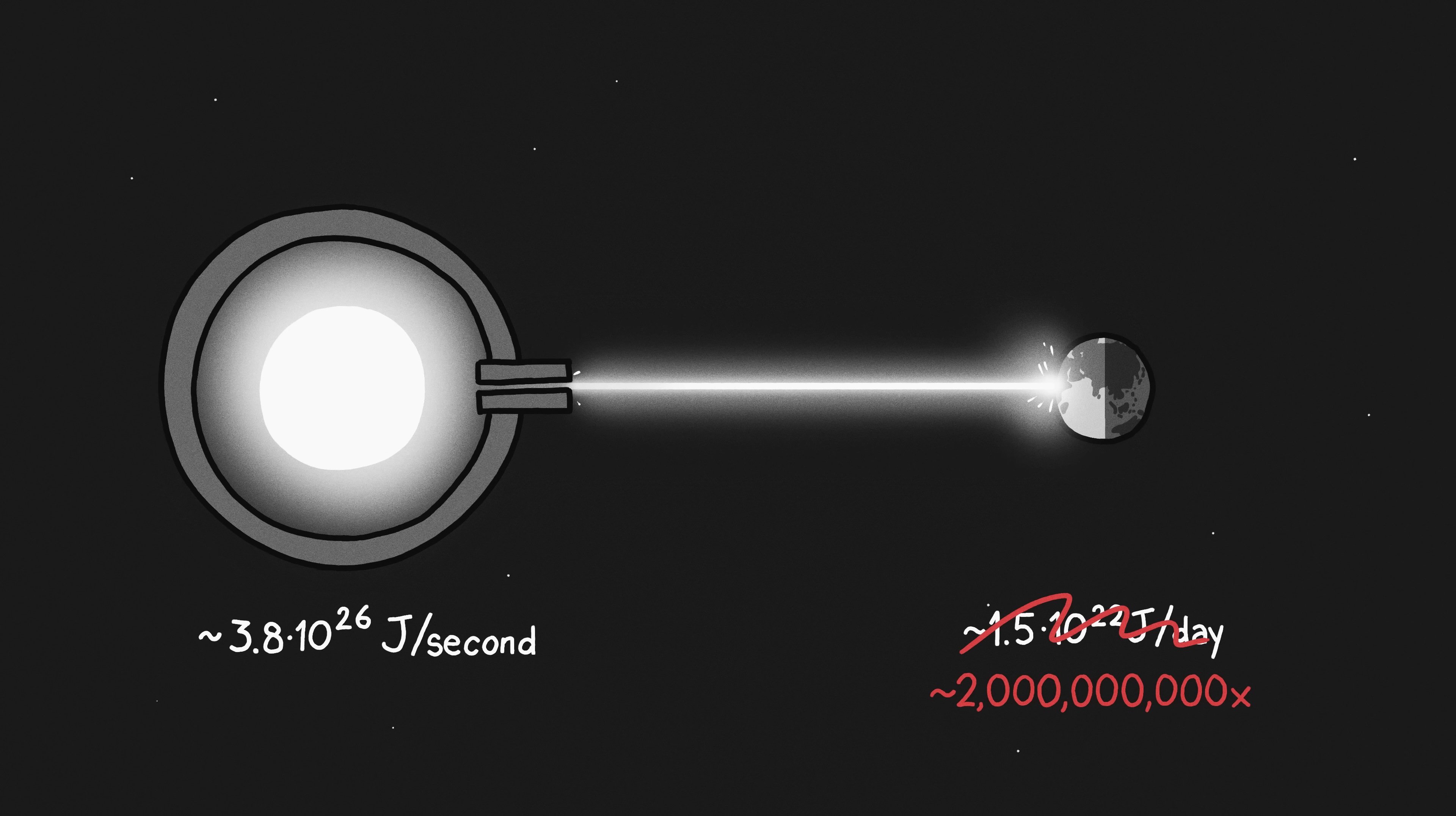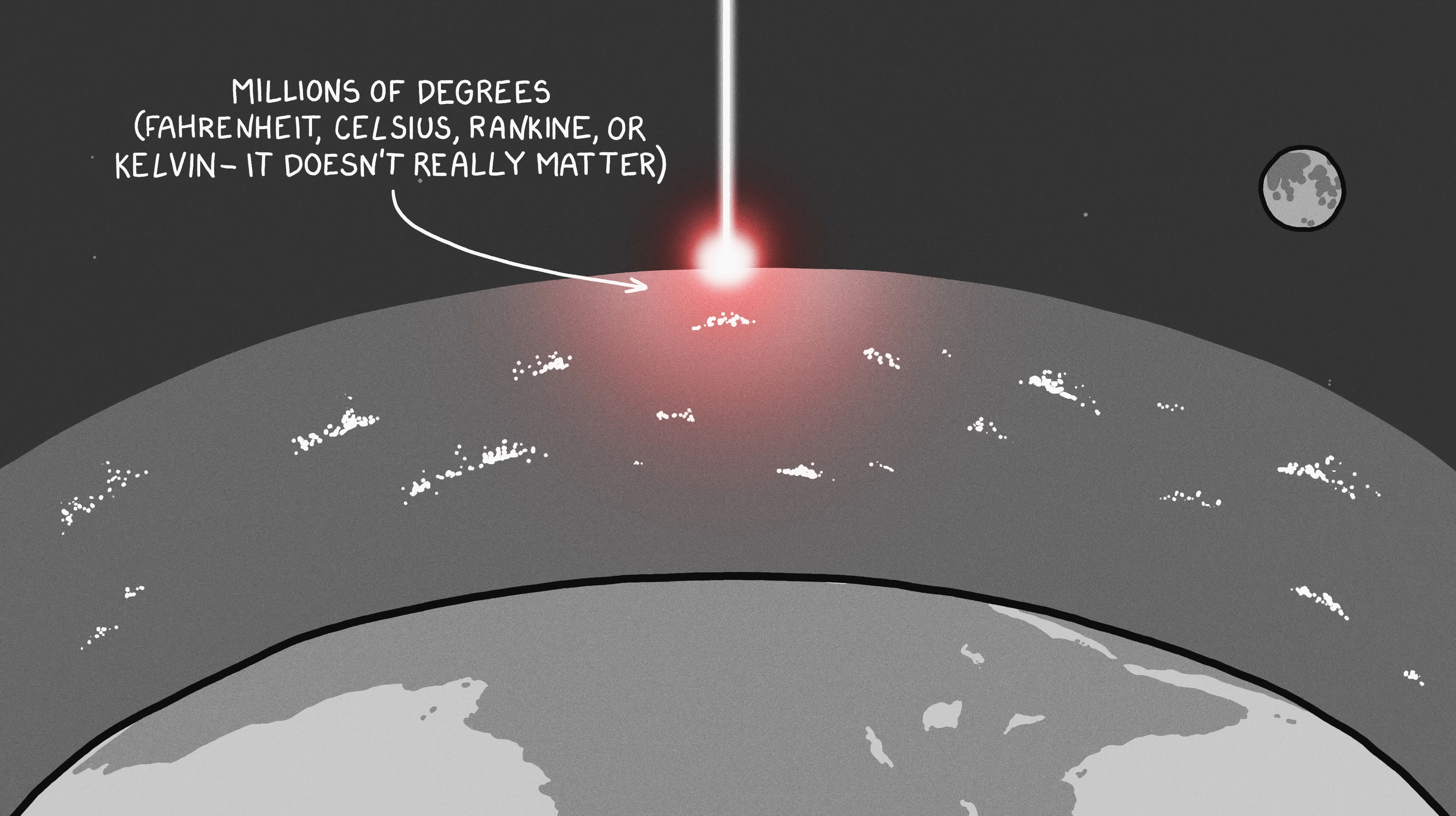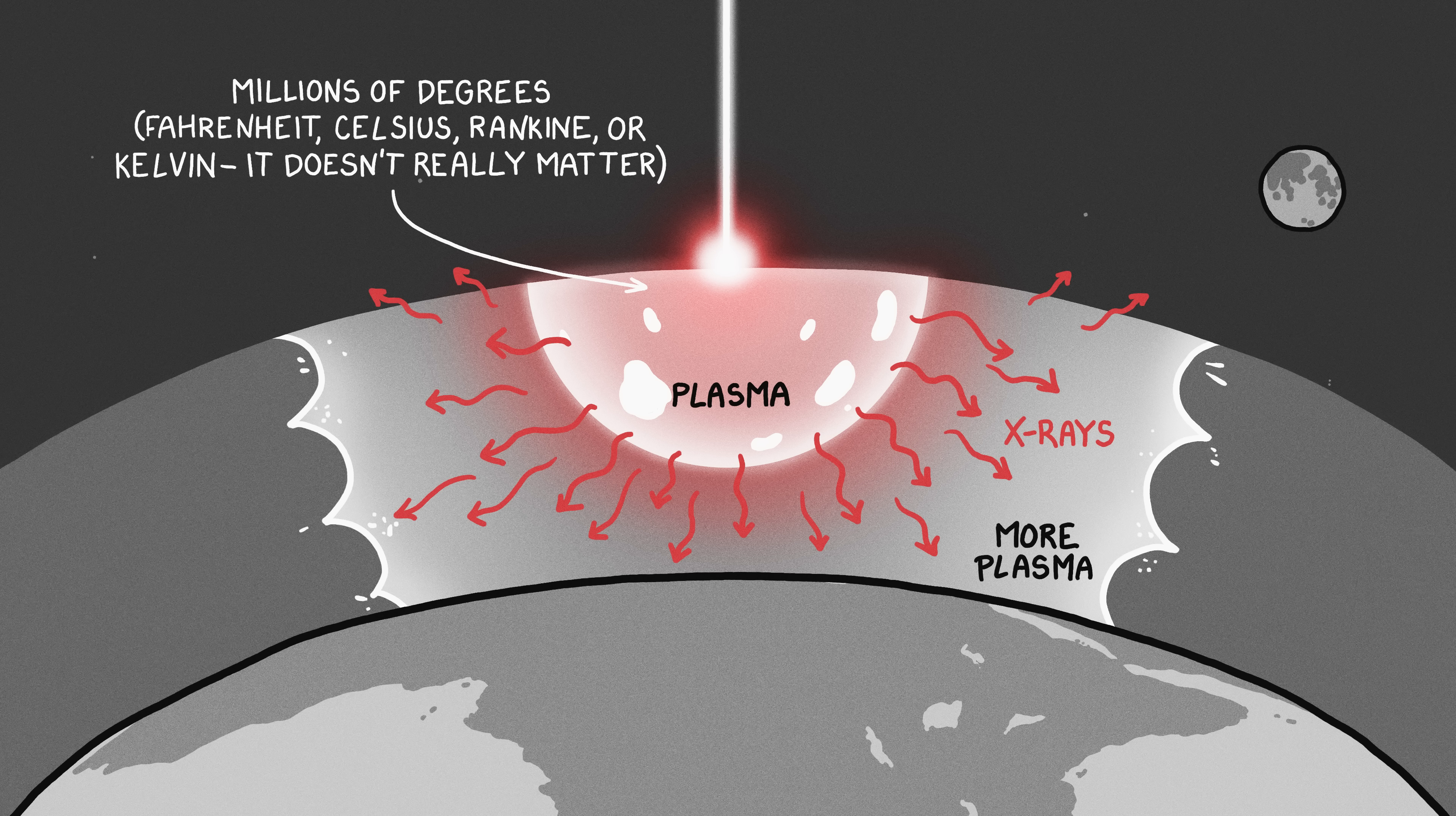And Max wants to concentrate all of that into a single square meter. When the beam of light hit the atmosphere, it would heat the air to millions of degrees in a fraction of a second, turning it into a plasma, which would start dumping its heat as a flood of X-rays.